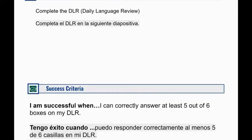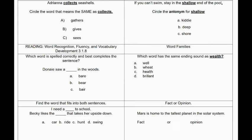For task number three, students will complete their daily language review, or DLR. In order to be successful, they will correctly answer at least five out of six boxes on their DLR. First, we need to find a word that means the same as 'collects' — that's like a synonym. For the second box, we need to find the antonym for the word 'shallow' in the sentence — an antonym means the opposite. For question number three, we need to find the correctly spelled word that fits in the sentence. For box number four, we want to find the word that has the same ending sound as the underlined word. For box number five, we need to find one word that fits into both sentences. And finally, we're going to read the sentence in the sixth box and tell if that is a fact or an opinion.